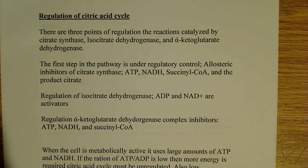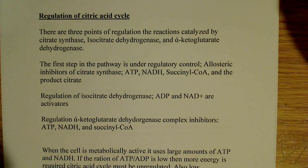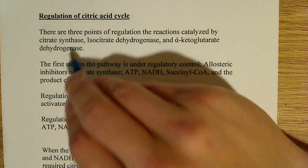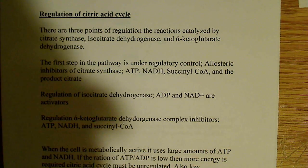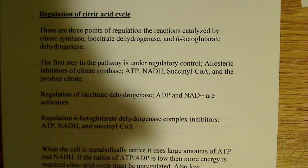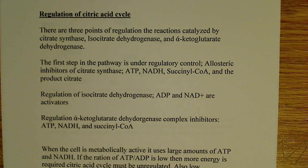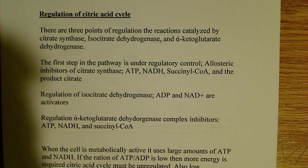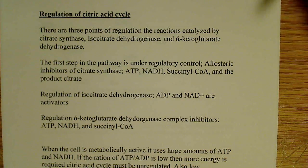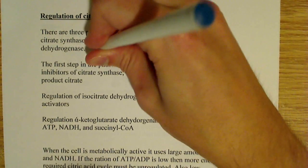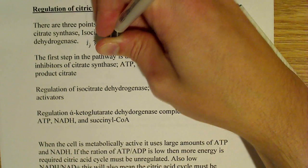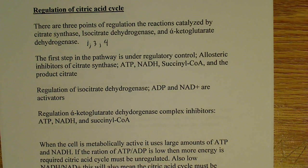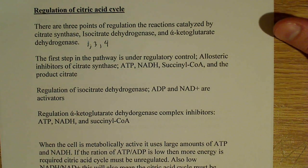The final topic is regulation of the citric acid cycle. There are three essential points of regulation: the reactions catalyzed by citrate synthase, isocitrate dehydrogenase, and alpha-ketoglutarate dehydrogenase. Citrate synthase is step one, isocitrate dehydrogenase is one of our oxidative decarboxylation steps at step three, and alpha-ketoglutarate dehydrogenase is our other oxidative decarboxylation step at step four. So steps one, three, and four in the citric acid cycle are the ones that are regulated.